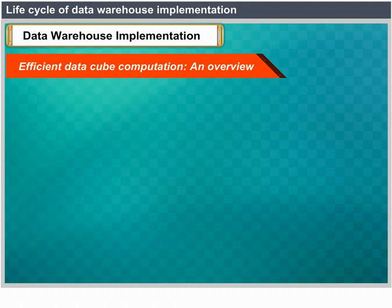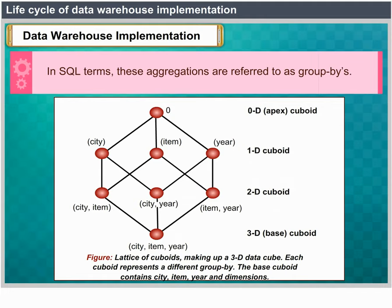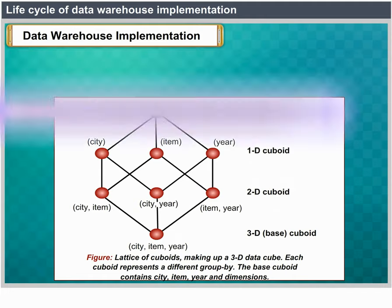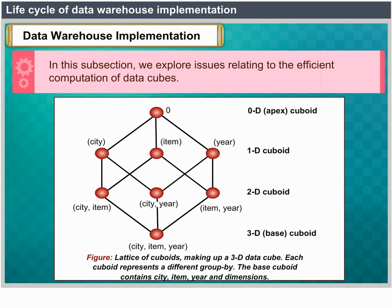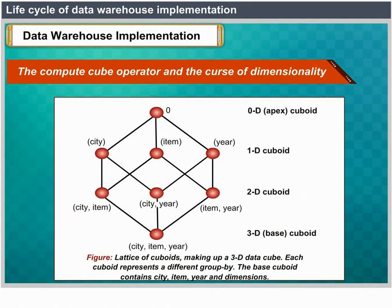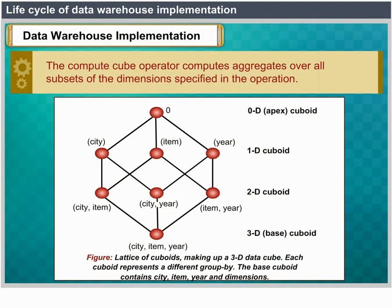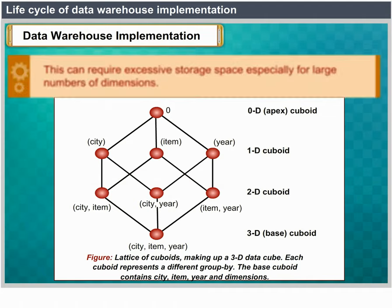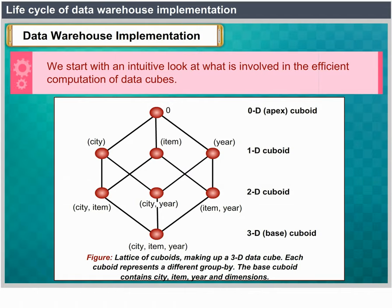Efficient data cube computation overview. At the core of multidimensional data analysis is the efficient computation of aggregations across many sets of dimensions. In SQL terms, these aggregations are referred to as group-bys. Each group-by can be represented by a cuboid, where the set of group-bys forms a lattice of cuboids defining a data cube. The compute cube operator computes aggregates over all subsets of the dimensions specified in the operation, which can require excessive storage space, especially for large numbers of dimensions.